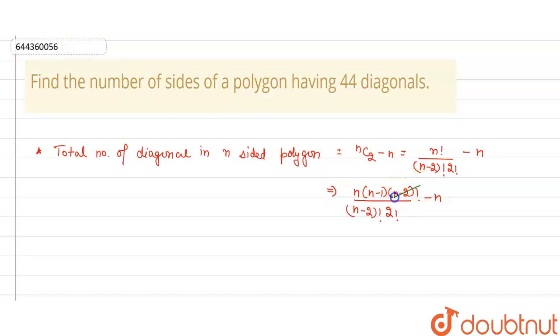The (n minus 2) factorial will cancel out. We will take LCM. This becomes n(n minus 1) minus 2n, all divided by 2. This gives us n(n minus 3) divided by 2.